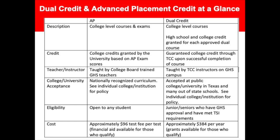This slide shows a comparison of dual credit and advanced placement courses. AP courses and dual credit courses are college level courses. AP courses are college credits granted by the university based on AP exam scores and are taught by College Board-trained GHS teachers using a nationally recognized curriculum. AP courses are open to any student, though some courses have prerequisites so be sure to check those on the course selection sheet. The approximate cost for AP test fees in the spring are $96 per test.